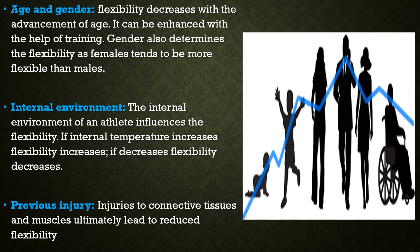Next is previous injury. Injury to connective tissues and muscles can lead to thickening and fibrosis on the affected area. Fibrous tissues are less elastic and can lead to limb shortening, ultimately leading to reduced flexibility.